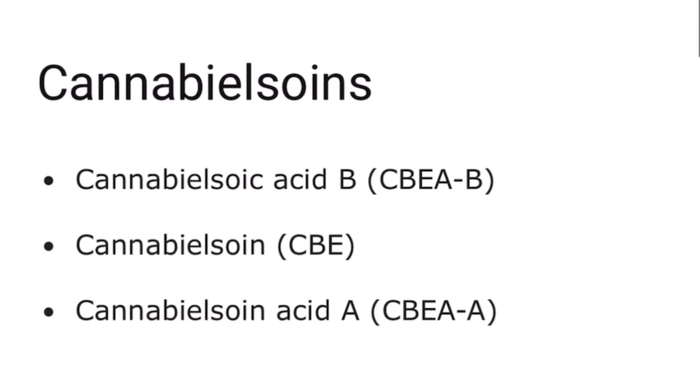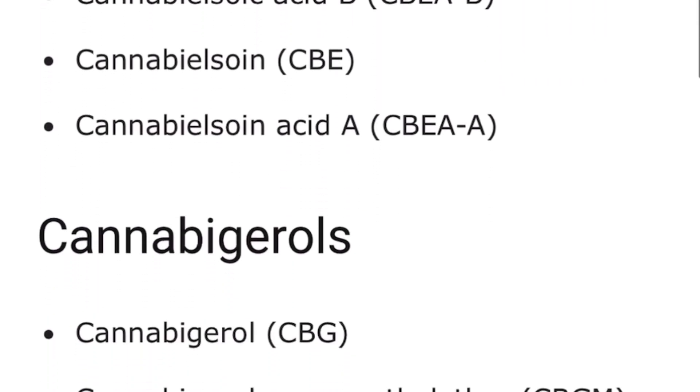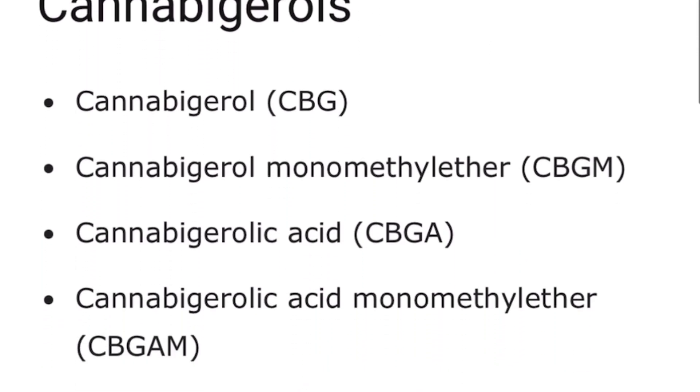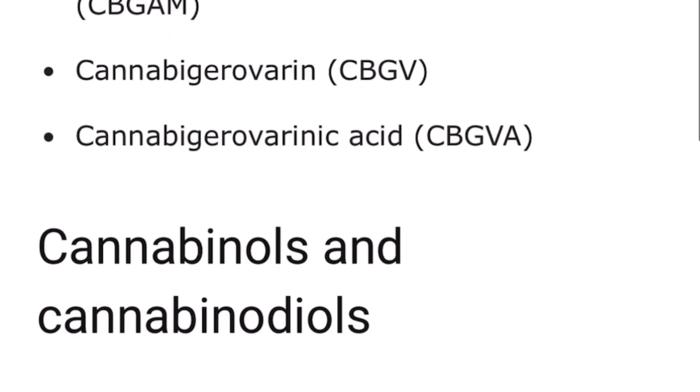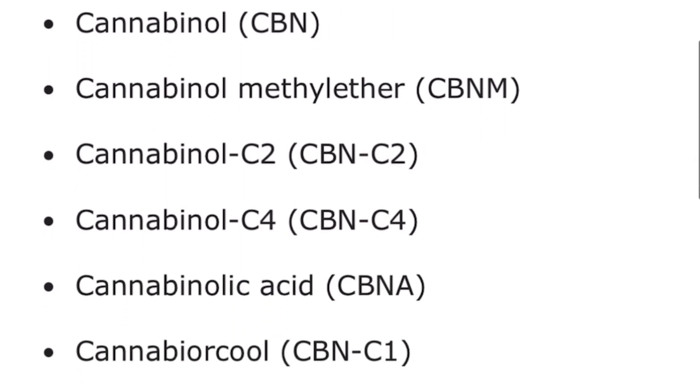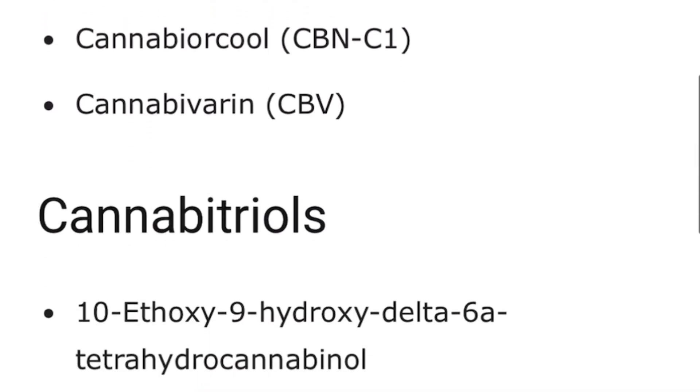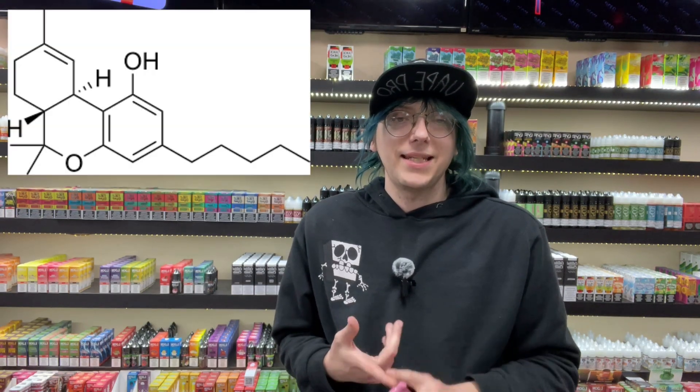Cannabinoids are tasteless, scentless compounds produced by plants. There are over a hundred different cannabinoids and more being discovered every day. The best known are THC and CBD, considered to be the primary cannabinoids as they occur in the most quantities. So let's get into these compounds and figure out what they're all about.